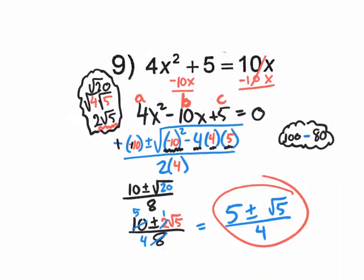I believe all the other ones end up with pretty nice discriminant values, which means you can actually take their square roots and you'll be able to add and subtract that number nicely instead of having a radical.